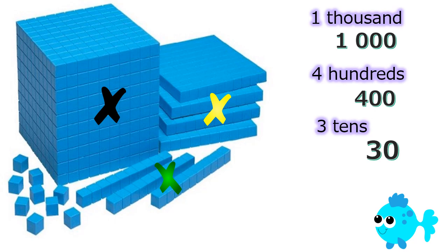The value of 3 groups of 10s is 30. Take a look at this red X — which base 10 blocks are they representing? If you said the ones, you are correct. How many ones do you see? There are 9 ones. Good job!